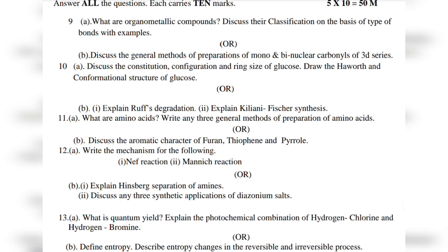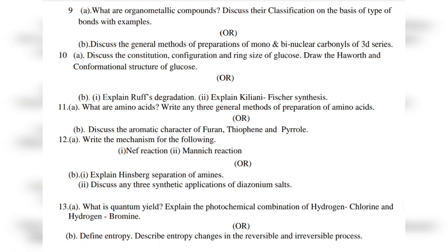Question 13a: What is quantum yield? Explain the photochemical combination of hydrogen-chlorine and hydrogen-bromine. Question 13b: Define entropy. Describe entropy changes in the reversible and irreversible process. This is very important.